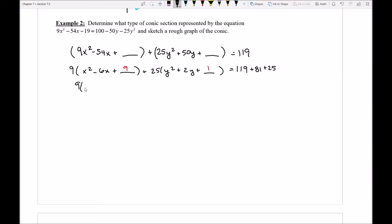So this turns into 9 times x minus 3 squared, 25 times y plus 1 squared, and on this side I get, I think it's 225.